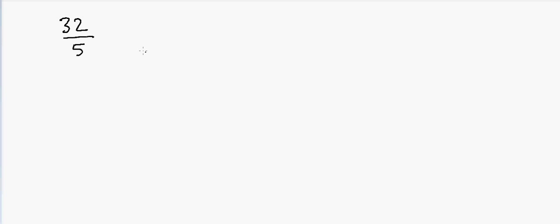Hi everyone. In this video we'll talk about another trick which can be used for fast calculation. Here we are dividing a number by 5. Suppose if I have 32 and I want to divide by 5 — if you look at it, it looks a little complicated, but the easy way to do this is to write it as 32 times 2 divided by 10.